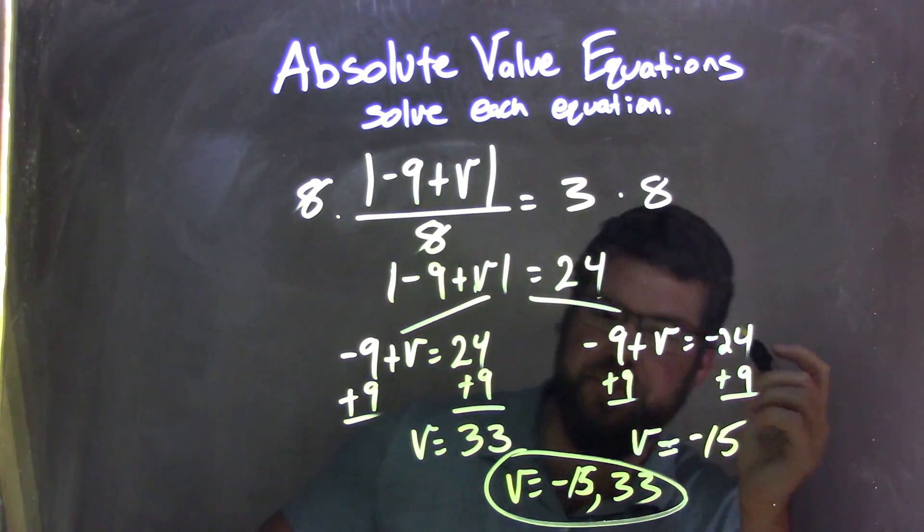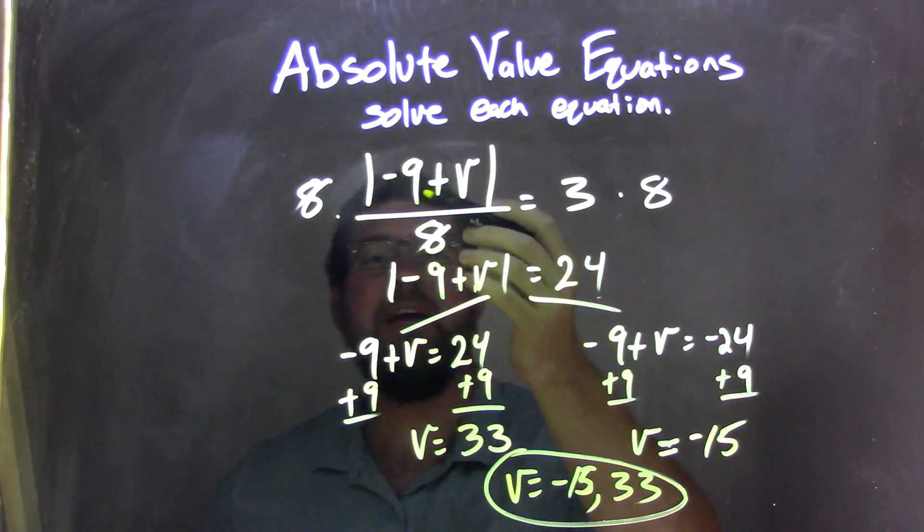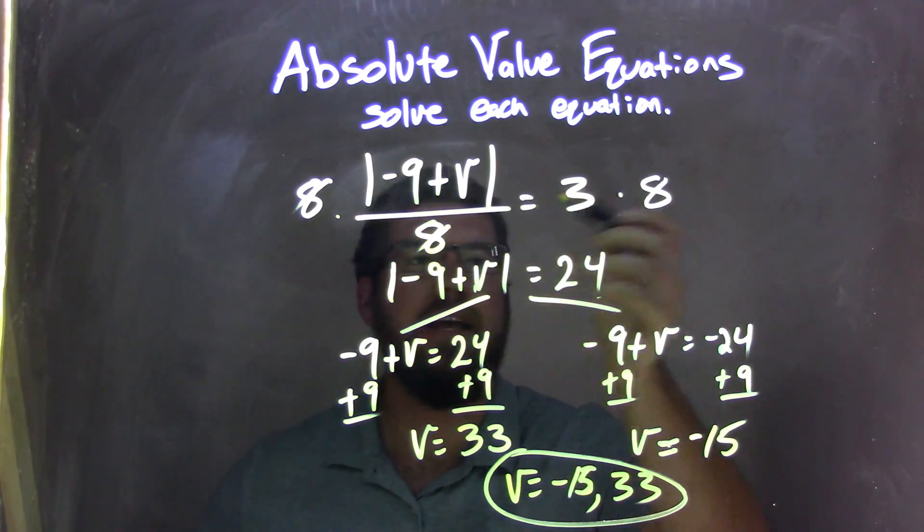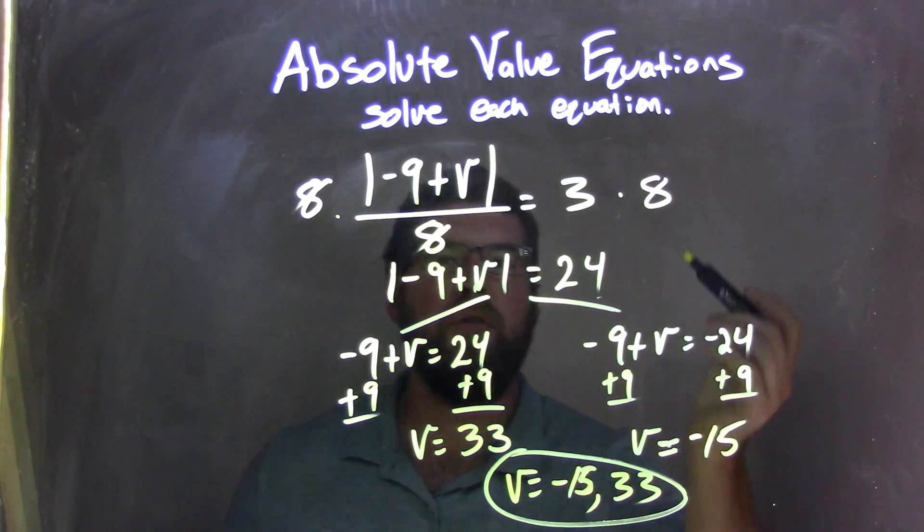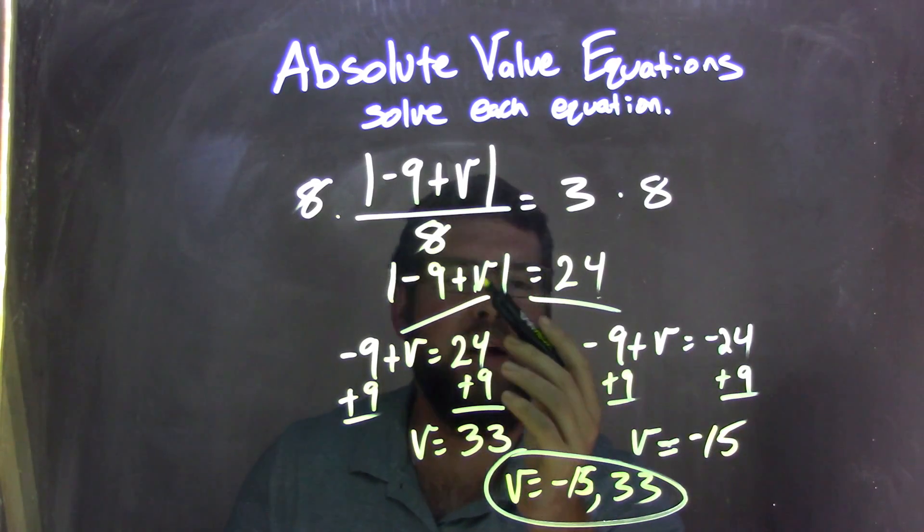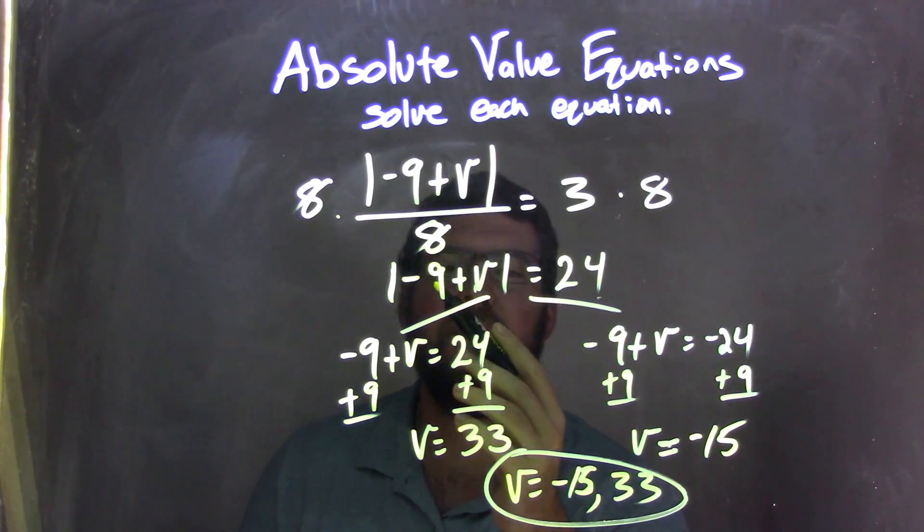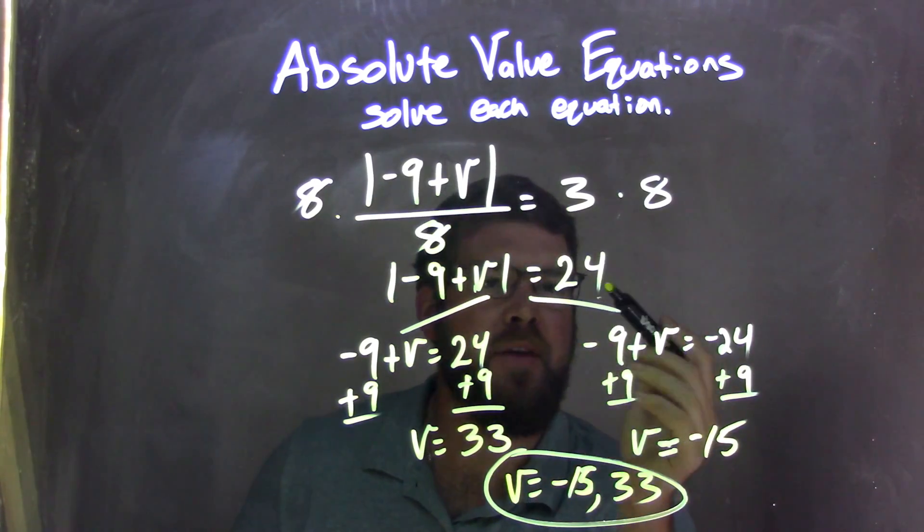Let's recap. We started with the absolute value of negative 9 plus V all over 8 equals 3. I multiplied both sides by 8 to isolate the absolute value, leaving me with the absolute value of negative 9 plus V equals 3 times 8, which is 24.